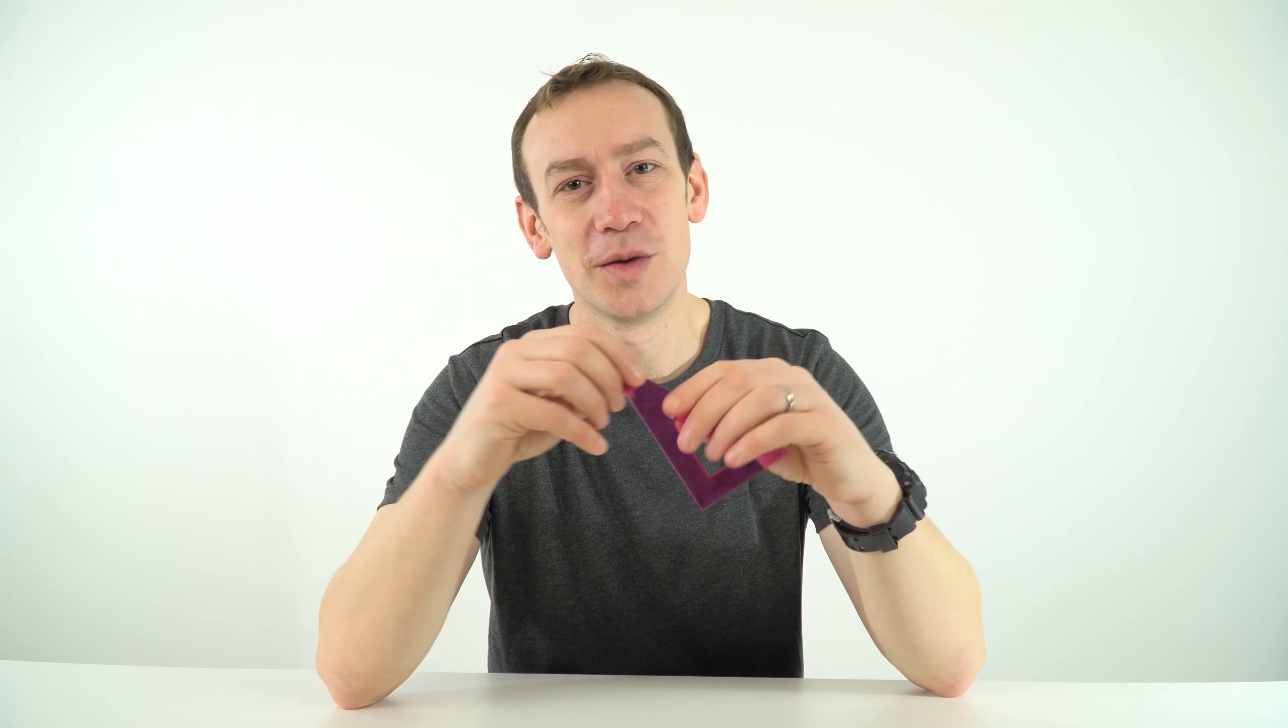So that is a set square—pretty straightforward, pretty simple to use, but it's something that is worth having in your pencil case or making sure that you do use when it comes to practical work in GCSE physics.